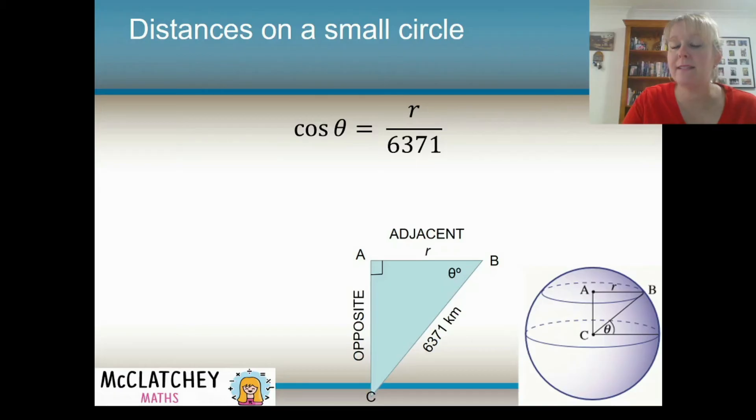So we can substitute the information that we've got into the cosine formula. Cosine of theta equals the radius divided by 6,371. Now in this particular case, we want to find some distances, not angles. So we're going to try and make r the subject of our equation. And what that means is we're going to multiply both sides by 6,371. And we get a value for our radius is 6,371 multiplied by cosine theta.